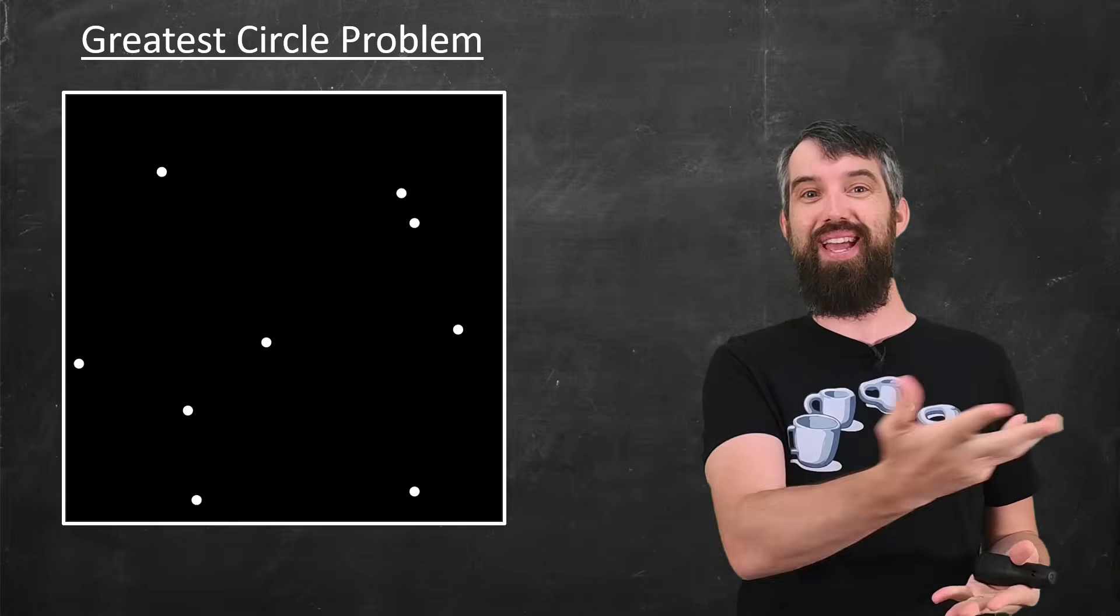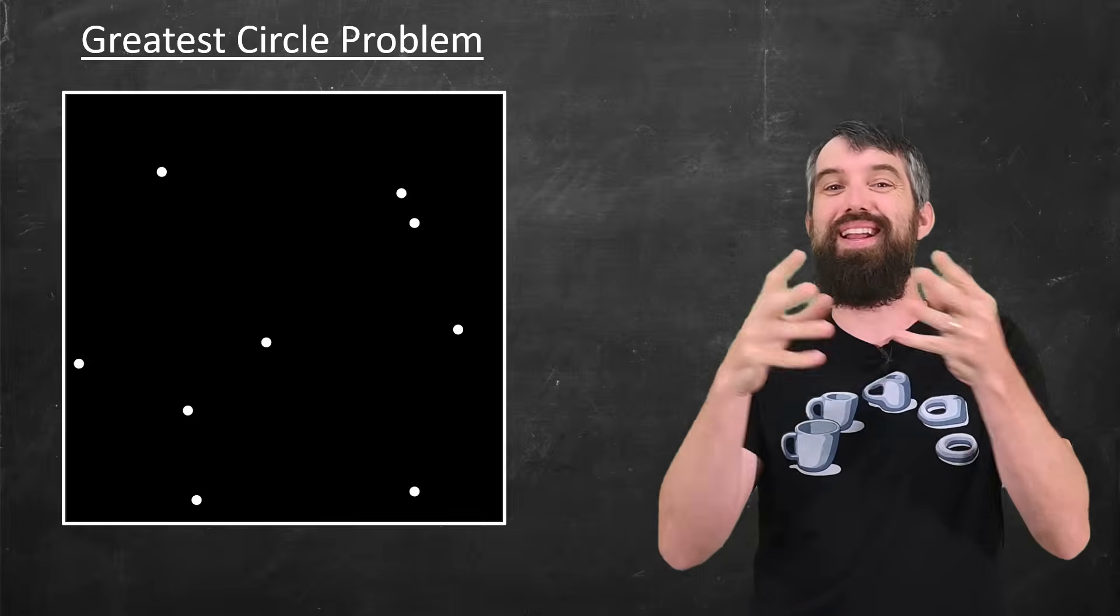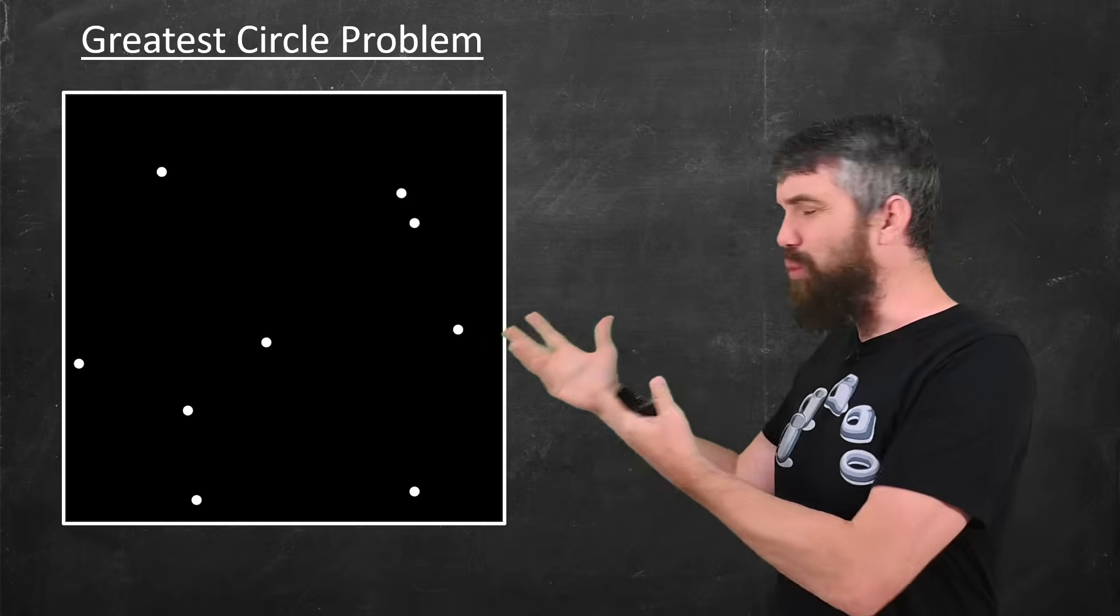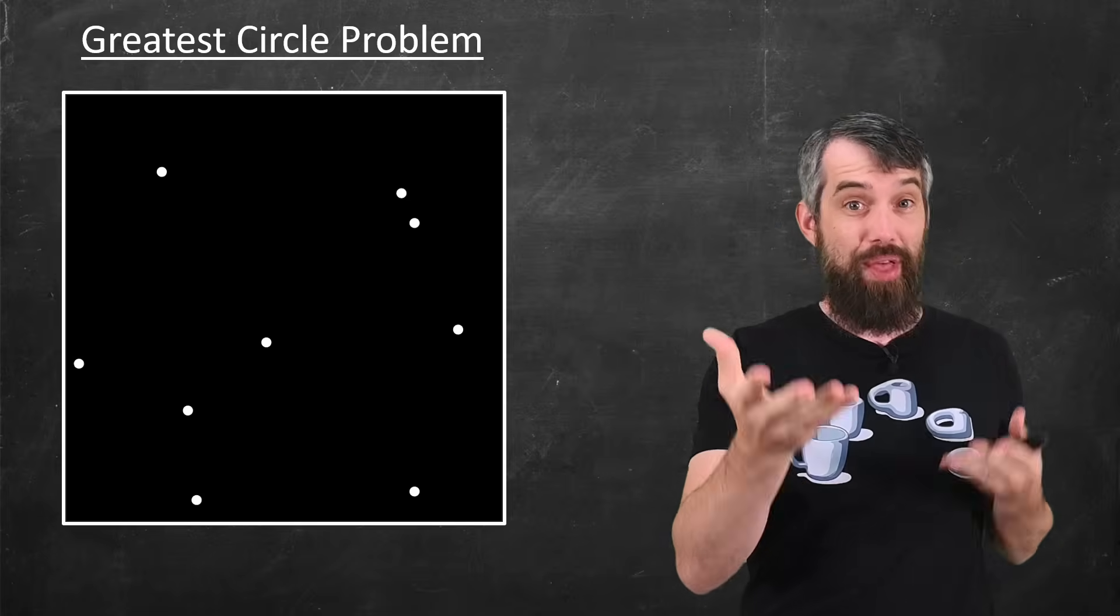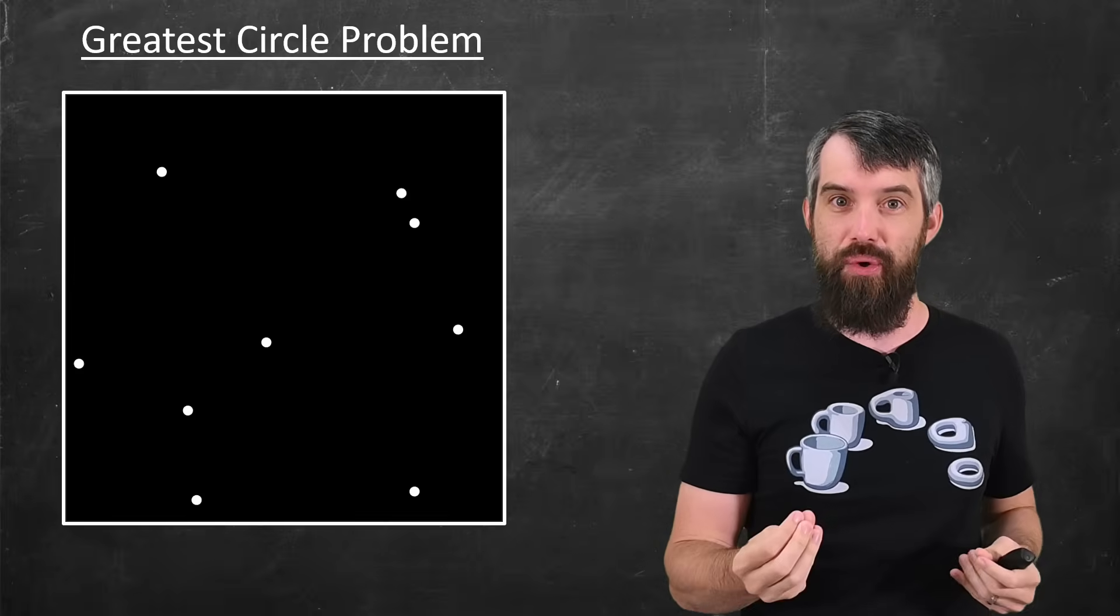Well, you want to put it somewhere where you can get the most number of people who think your supermarket is closer than the other ones. This turns out to be equivalent to saying, where is the largest circle that I can put in this city that avoids the existing nodes?